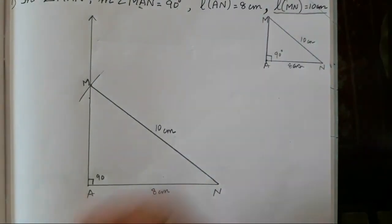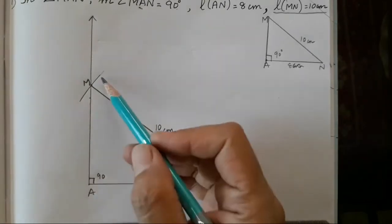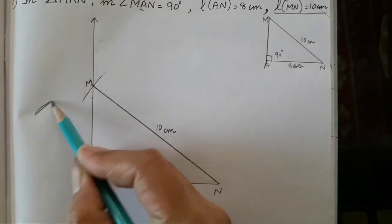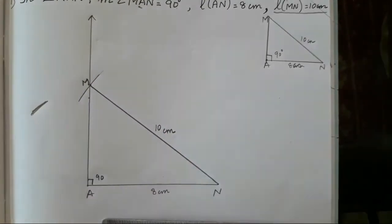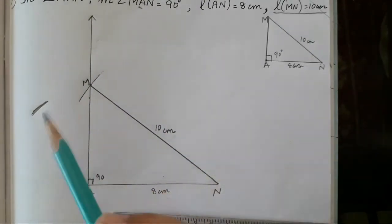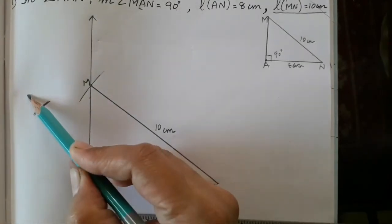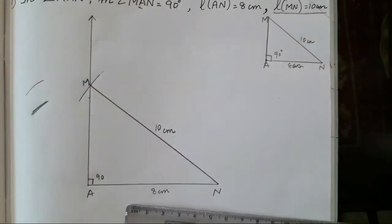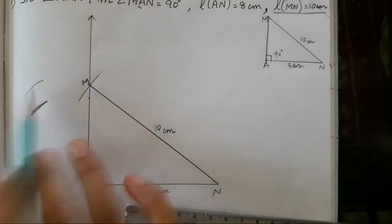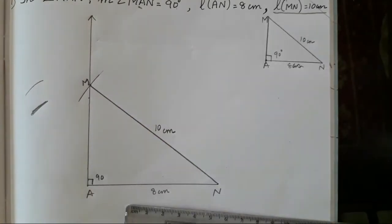Try to draw the arc in just one stroke. Don't draw it multiple times — that is wrong. Draw the arc in just one stroke. It can be light, no problem, as long as it is visible. That's it. Now let's draw the second one.